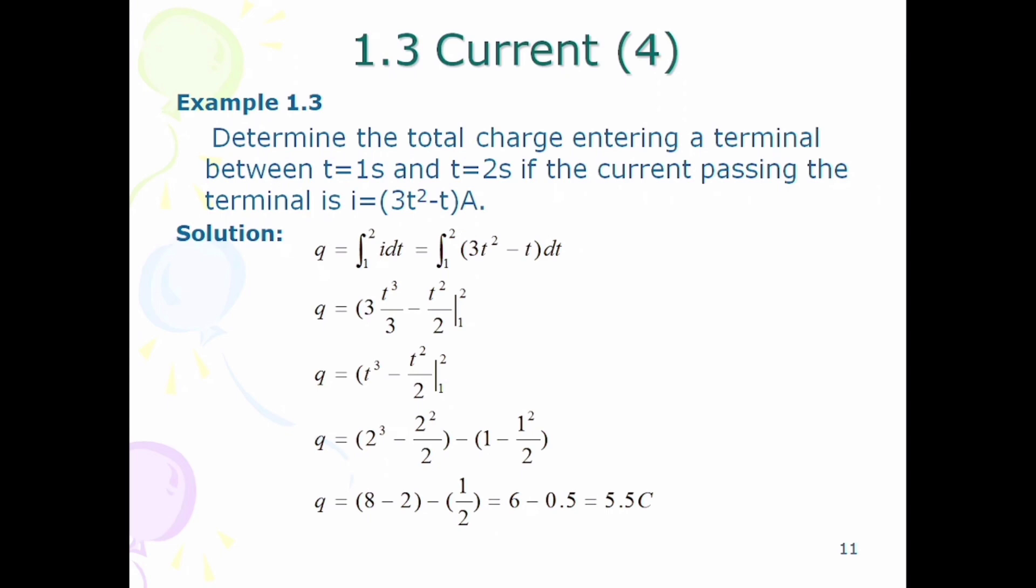We use the formula q equals integral i dt, and the lower limit is 1 second and the upper limit is 2 seconds. We have to substitute the value of i, which is 3t² minus t.